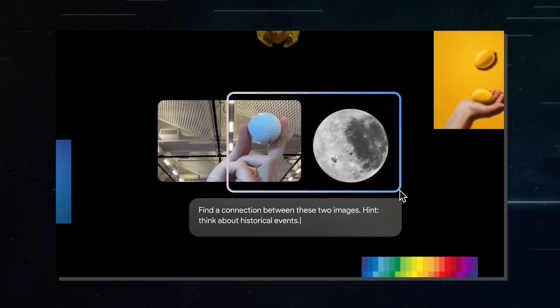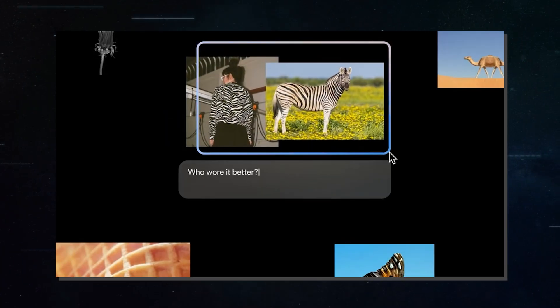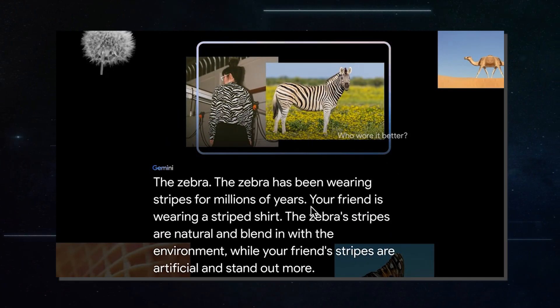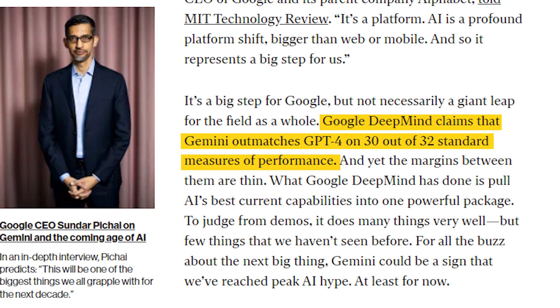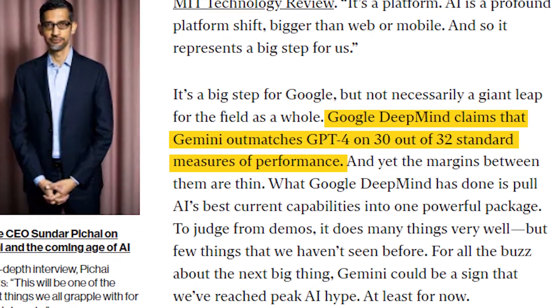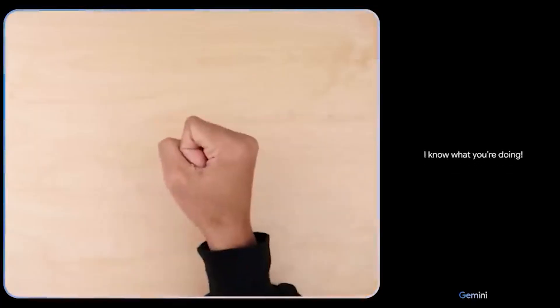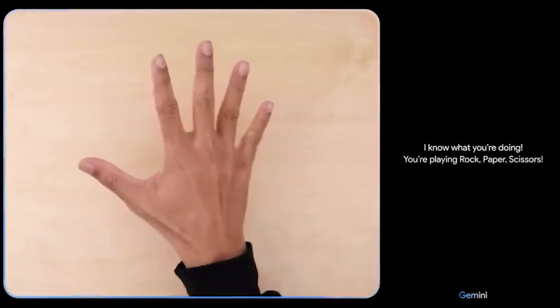Google ran extensive benchmarks, comparing the two models across a range of tasks. And guess what? Gemini topped the charts in 30 out of 32 of these benchmarks. It showed particular strengths in understanding and interacting with video and audio.